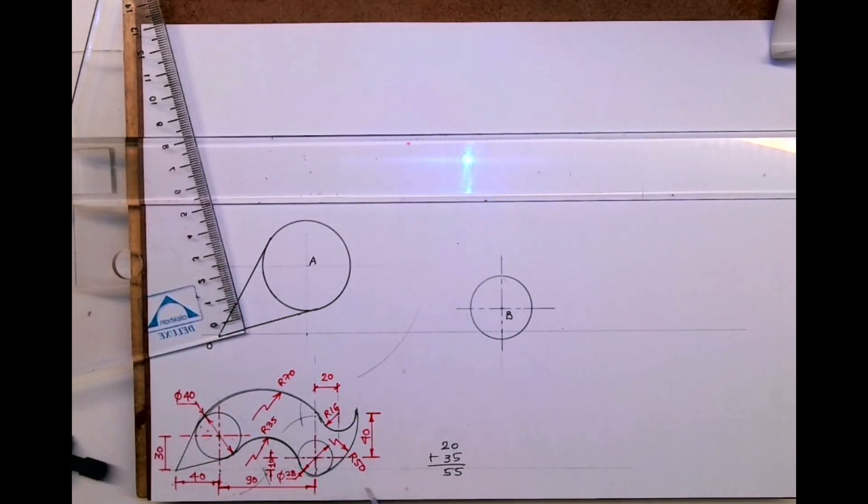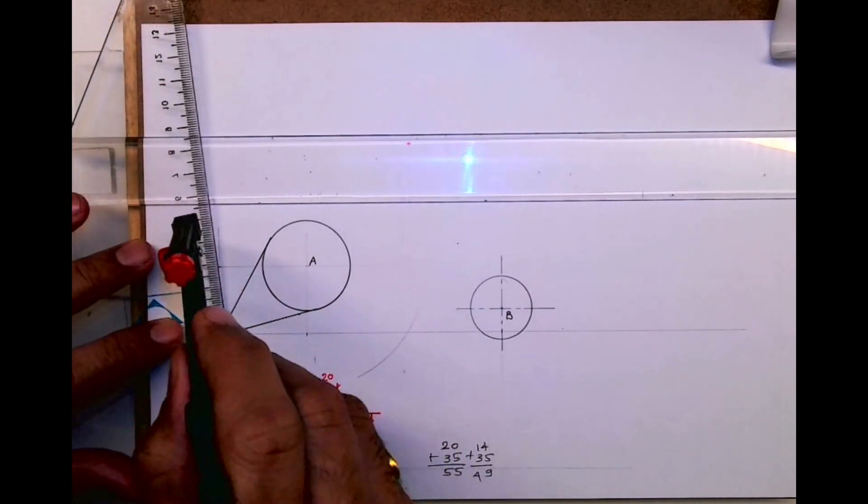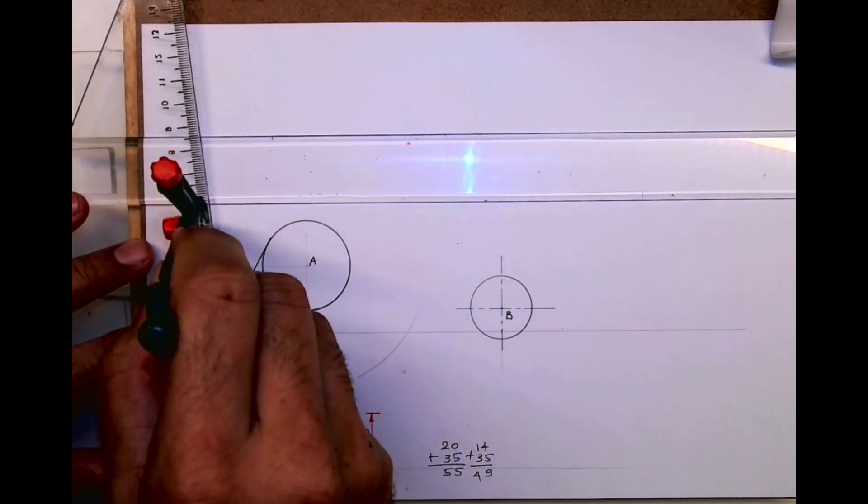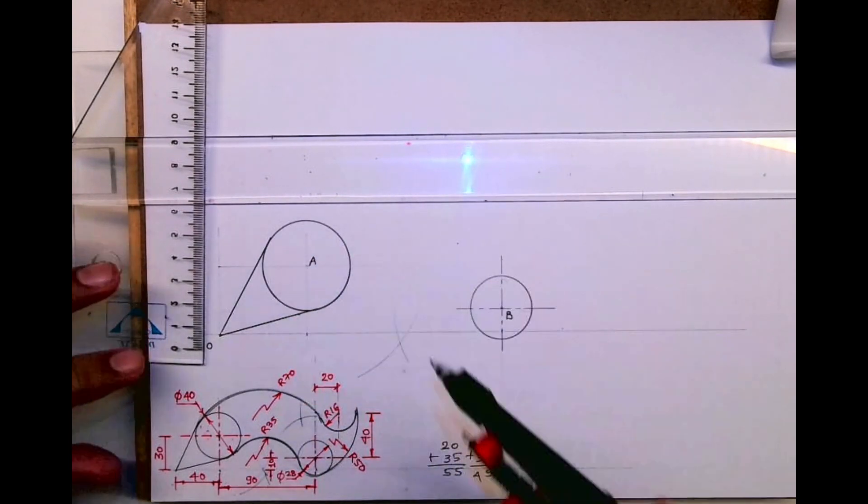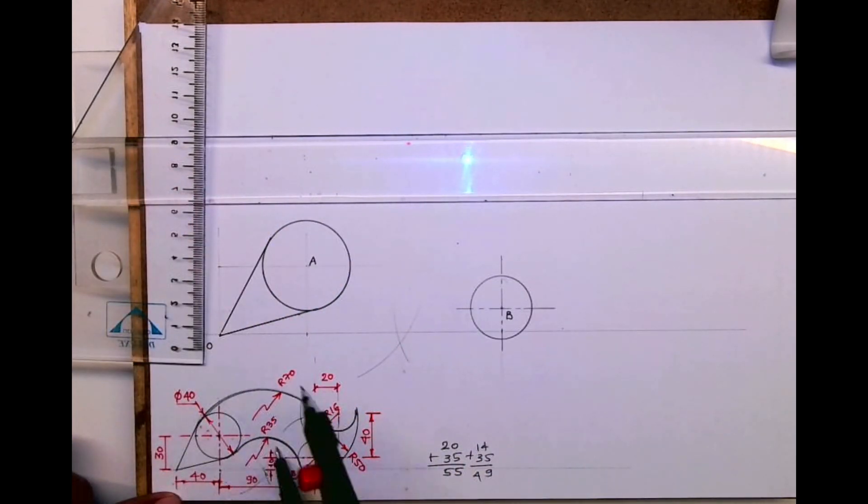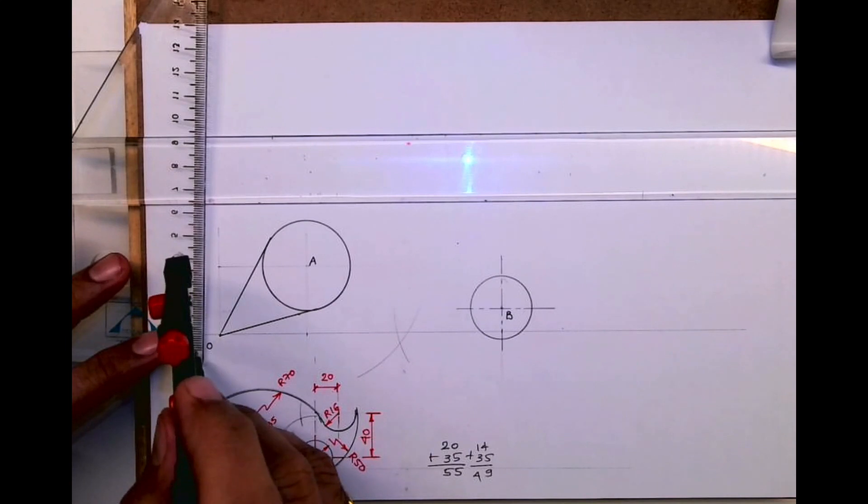Same way from point B I'll cut 14 plus 35, which is 49. Wherever it will intersect, from that point we'll draw radius 35.